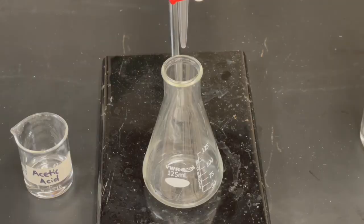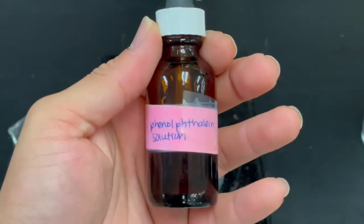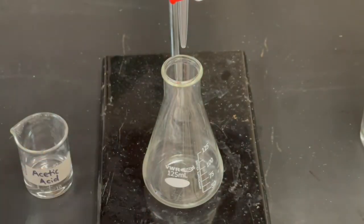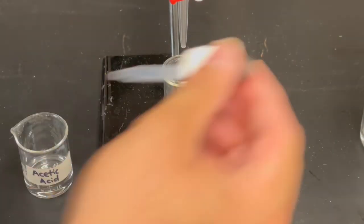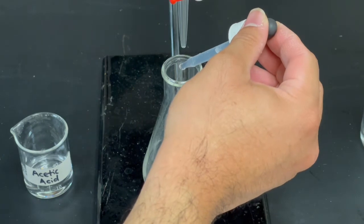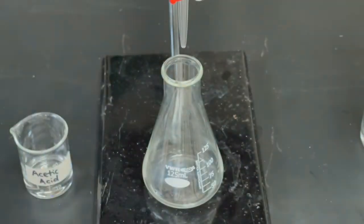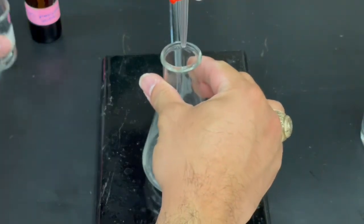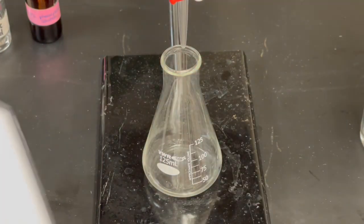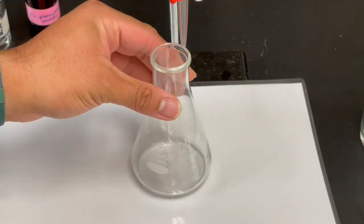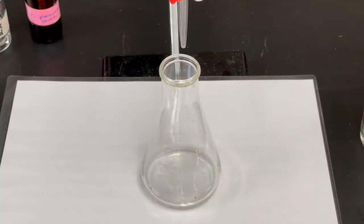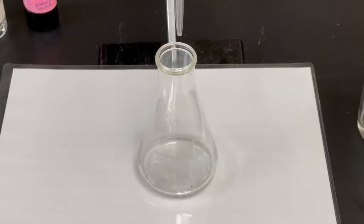The next step is to add two to three drops of phenolphthalein into my Erlenmeyer flask. One, two, three. Shake it. And then I'm going to be placing a white sheet underneath to detect any color change. Let's move on to our next step.